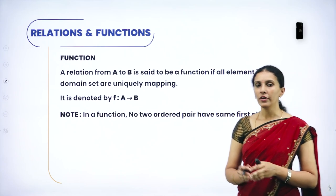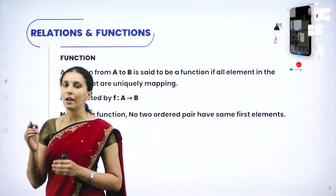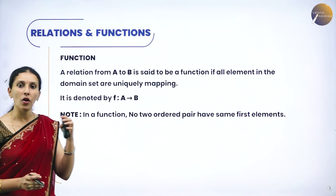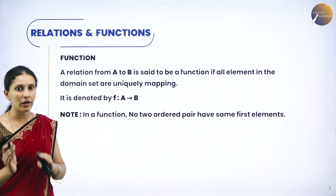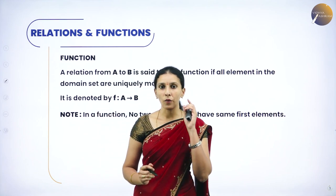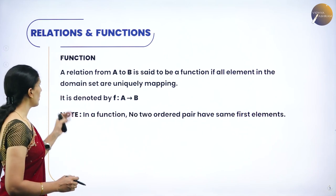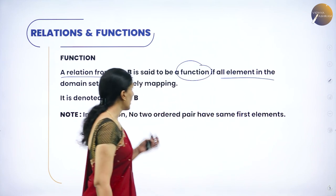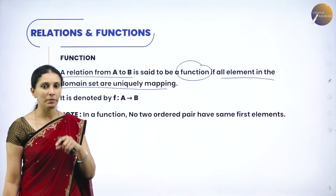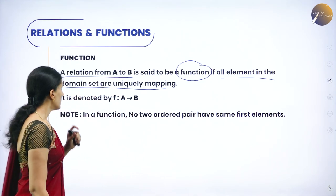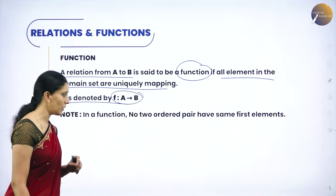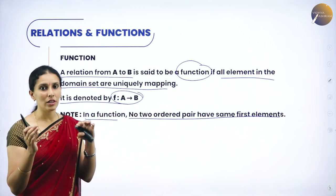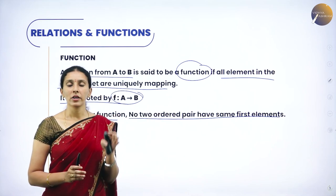A function is a relation from set A to set B where every element in the domain should have one and only one image in the co-domain. All relations cannot become a function, but all functions are relations. The condition for a relation to become a function is that every element in the domain must have only a unique image in the co-domain. A relation from A to B is said to be a function if all the elements in the domain set are uniquely mapping — that is, it should contain only one element as its image — and it is denoted by F from set A to set B. In a function, no two ordered pairs have the same first element.